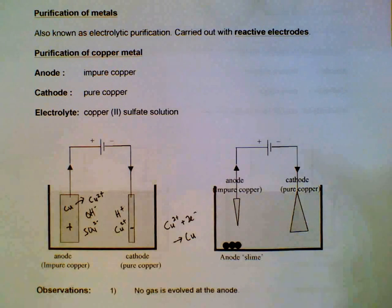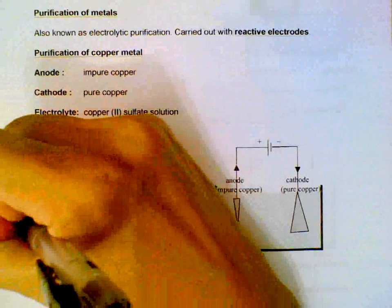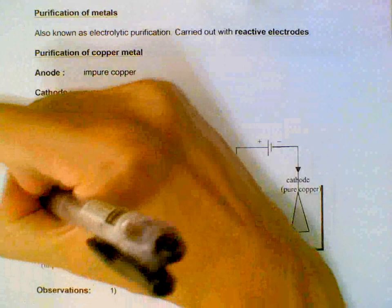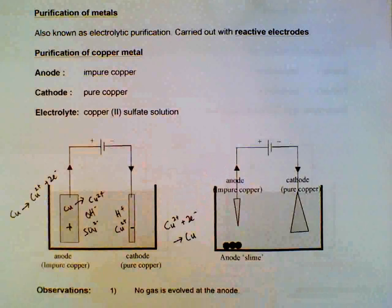So at the anode we have the oxidation reaction: copper becoming copper 2+ ions. Oxidation.